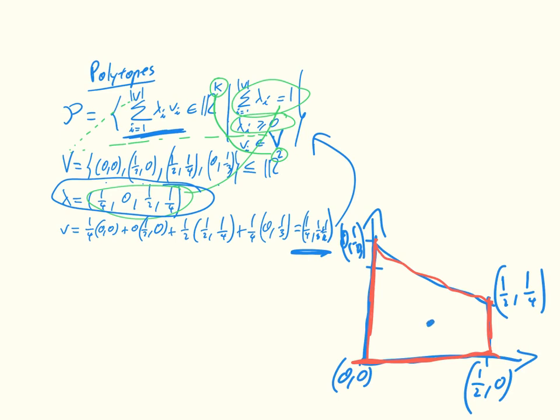Once we have our set of vertices, these are just these points, and then essentially we just have all the things that are inside the shape made by those vertices. And now that's one definition of a polytope.